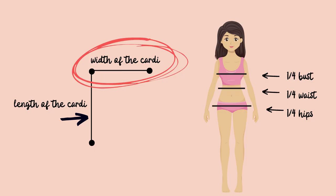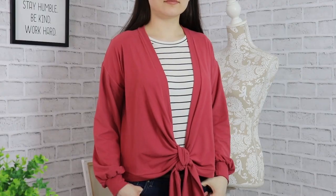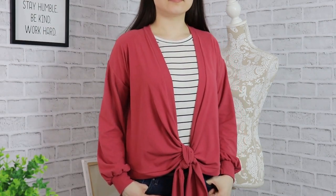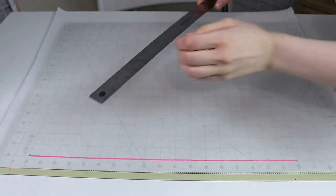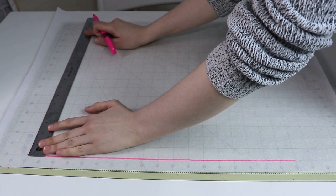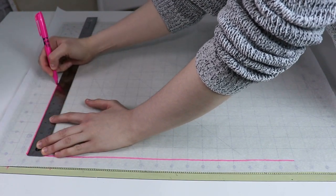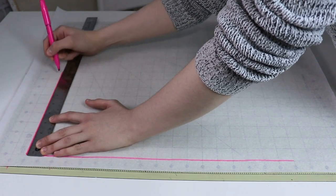For the width of your cardigan, take the largest full measurement of the following three: bust, waist, or hips. Since my cardigan does not go past my hips and ends just a little below the waist, I'm going to use either bust or waist measurement. My largest measurement is bust, so I'm going to take one quarter of that for my pattern.